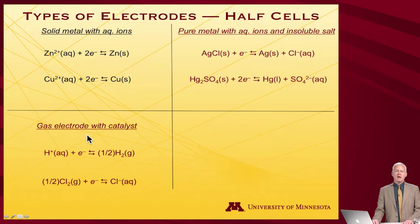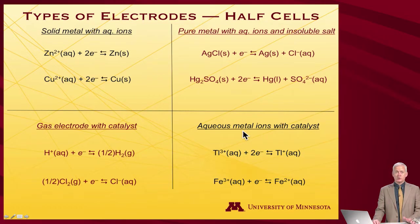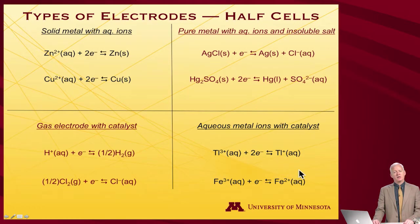We can also have so-called gas electrodes. In a gas electrode there is an interaction of a gas with a solid surface — a catalyst — that permits, in the case of hydrogen for example, the reduction of protons to give rise to hydrogen gas. In the case of the chlorine electrode, chlorine gas interacts with a catalyst and is reduced by electrons to make the chloride anion. Finally, we can have a reduction taking place altogether in solution between different oxidation states of metals — for example, thallium and iron being reduced from their 3-plus oxidation states: thallium by two electrons to a 1-plus state, and iron by a single electron to a 2-plus state. All of those will have some free energy associated with them.